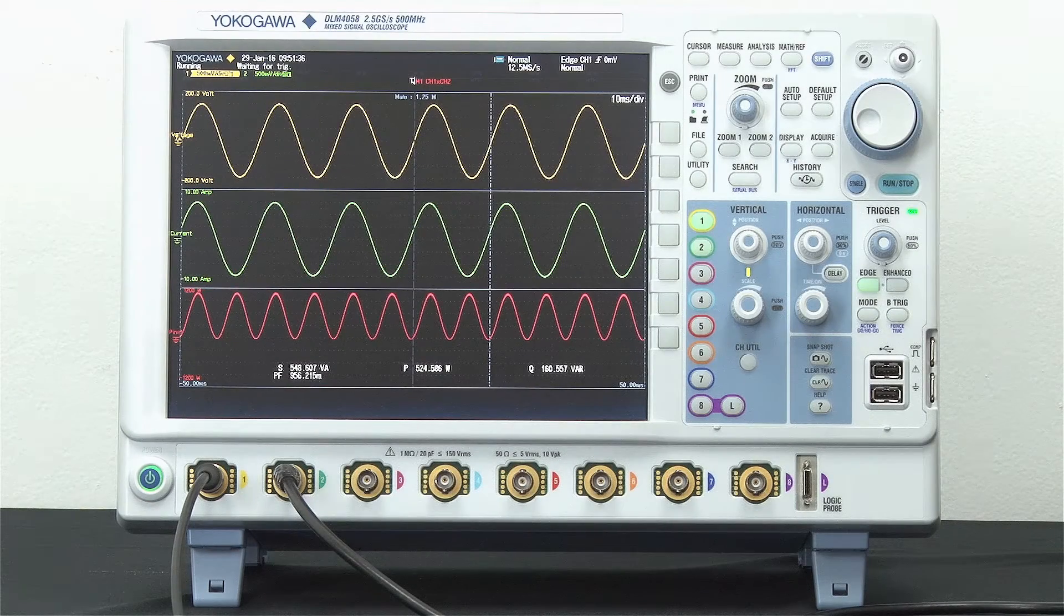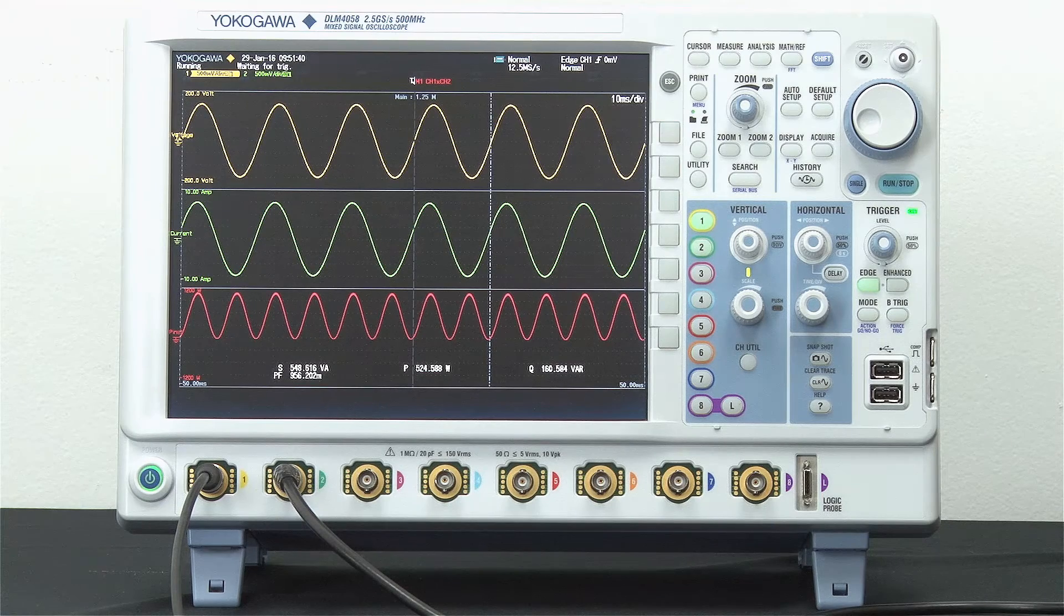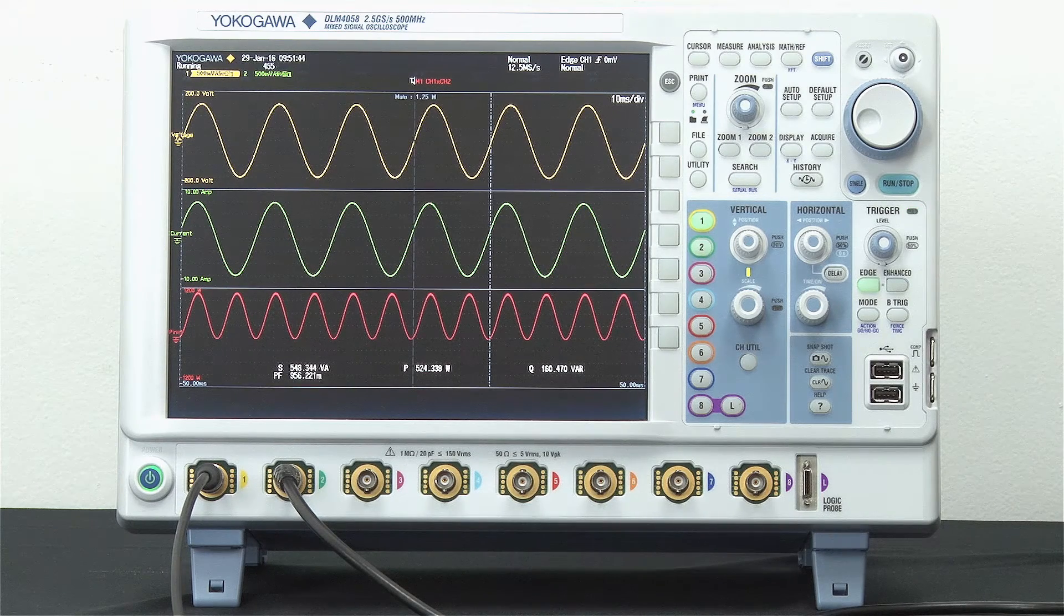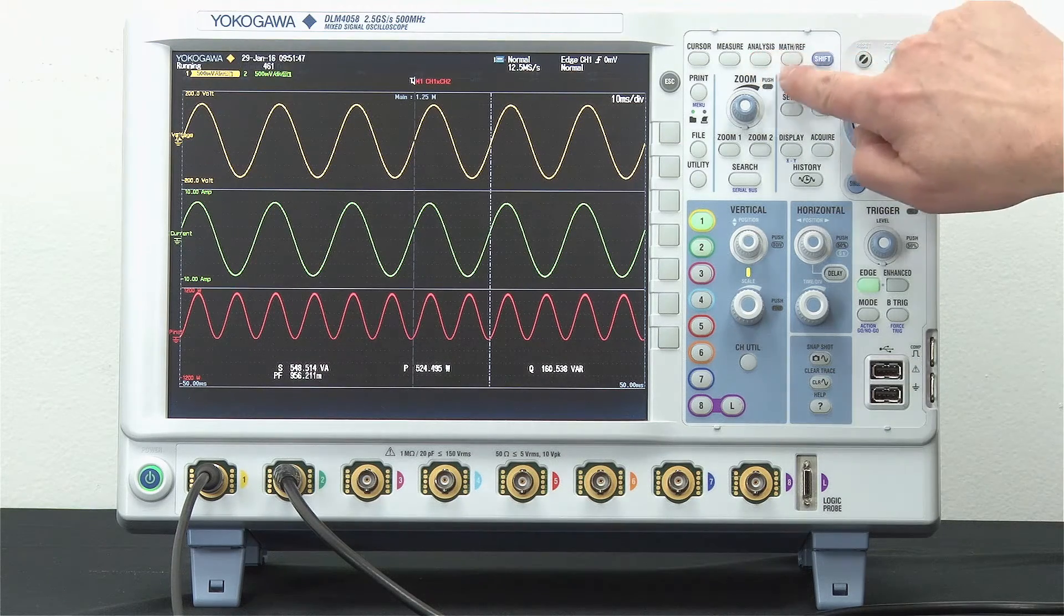To demonstrate the onboard calculator, I will be using a DLM4000, the industry's first 500 megahertz 8-channel oscilloscope. First, you need to see the DLM4000's math feature.